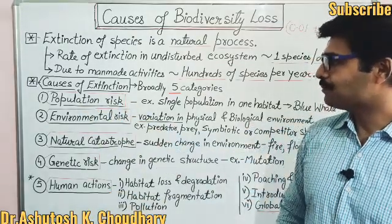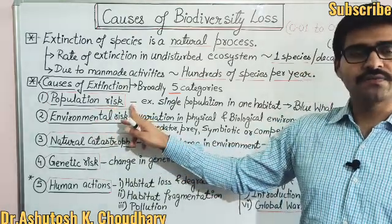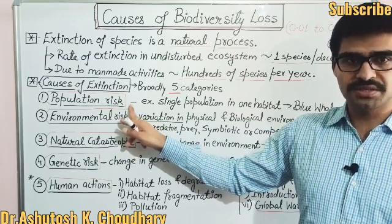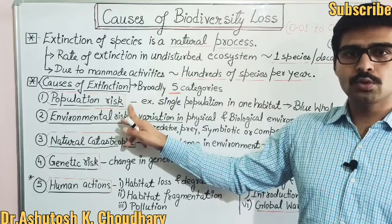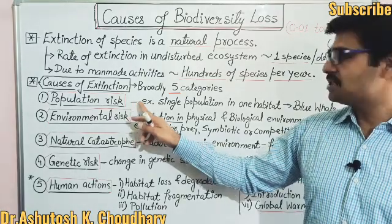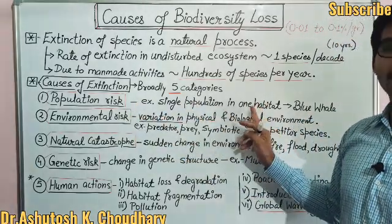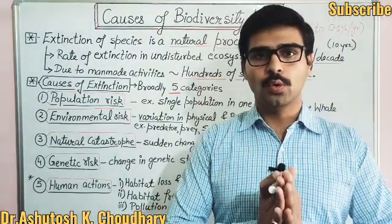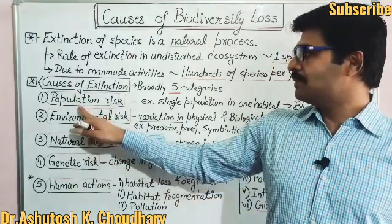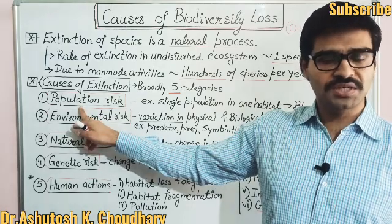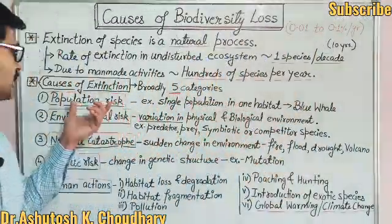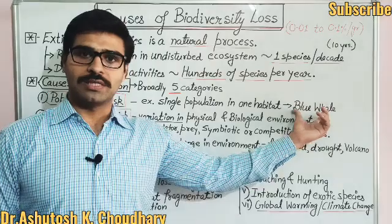The first is population risk. Population risk means change or variation in the population birth rate, death rate, and population characteristics due to some natural or manmade causes. This population risk is generally observed in a single population in one habitat — if one habitat is predominantly occupied by only one species, there may be a risk of biodiversity extinction.